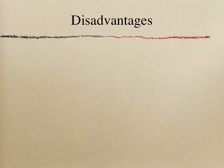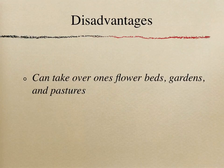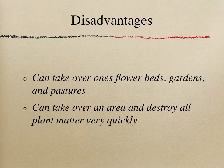The disadvantages of parasitic plants are rather obvious. The potential to have plants take over one's flower beds, gardens, or pastures is not exactly desirable. For some plants, the ability to take over an area and destroy all other plants can happen fairly quickly, and unfortunately, once a parasitic plant has a foothold, it can be almost impossible to get rid of the invaders.